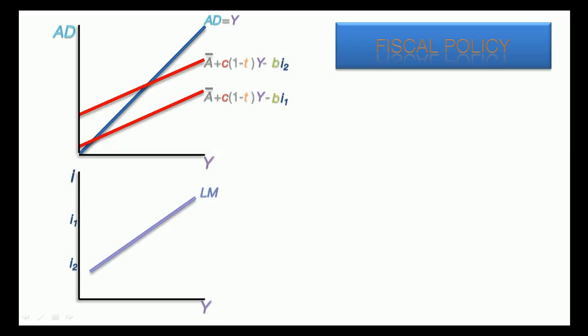Fiscal policy takes the form of government spending. The two red aggregate demand functions contain A-bar, or exogenous demand, of which government spending is a factor. Here the IS curve is derived using the first value of exogenous demand. Equilibrium income and interest rate are found.